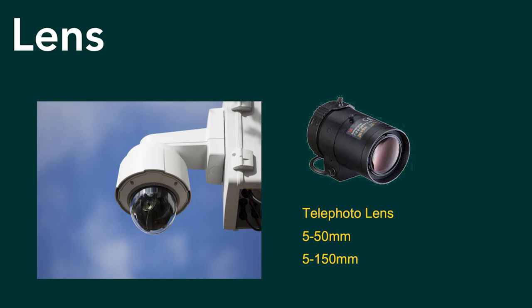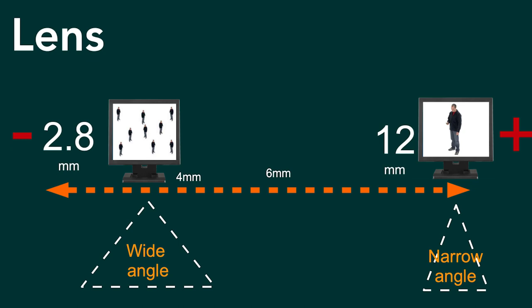When you're moving up to pan-tilt-zoom cameras you'll see they're pricier, often due to the lens — the telephoto lens can sometimes cost more than the actual camera module. You'll see even bigger numbers like 5 to 50mm or 5 to 150mm. When purchasing a PTZ camera you'll see numbers like 25x zoom, but when you look at the actual lens range you'll get an idea of what you're able to see.